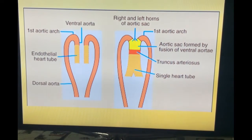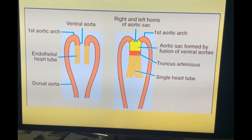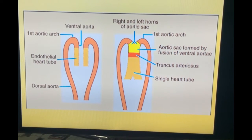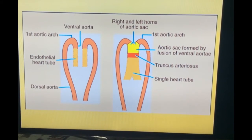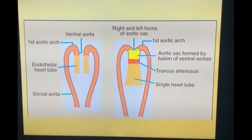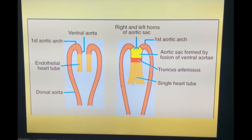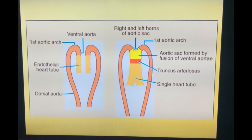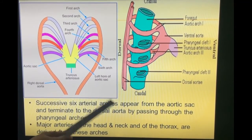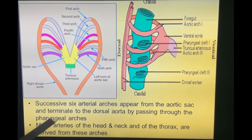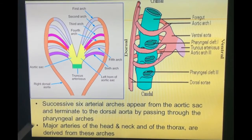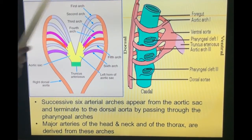The pharyngeal arches along with their arteries are not formed simultaneously — they are formed one by one: first, second, third, fourth, fifth, and sixth. All six arches give rise to some structures, except the fifth arch, which regresses along with its artery and nerve. So finally, the first, second, third, fourth, and sixth arches remain and give rise to different structures. Six successive arterial arches appear from the aortic sac and terminate in the right and left dorsal aorta by passing through the pharyngeal arches, forming the major arteries of the head, neck, and thorax.